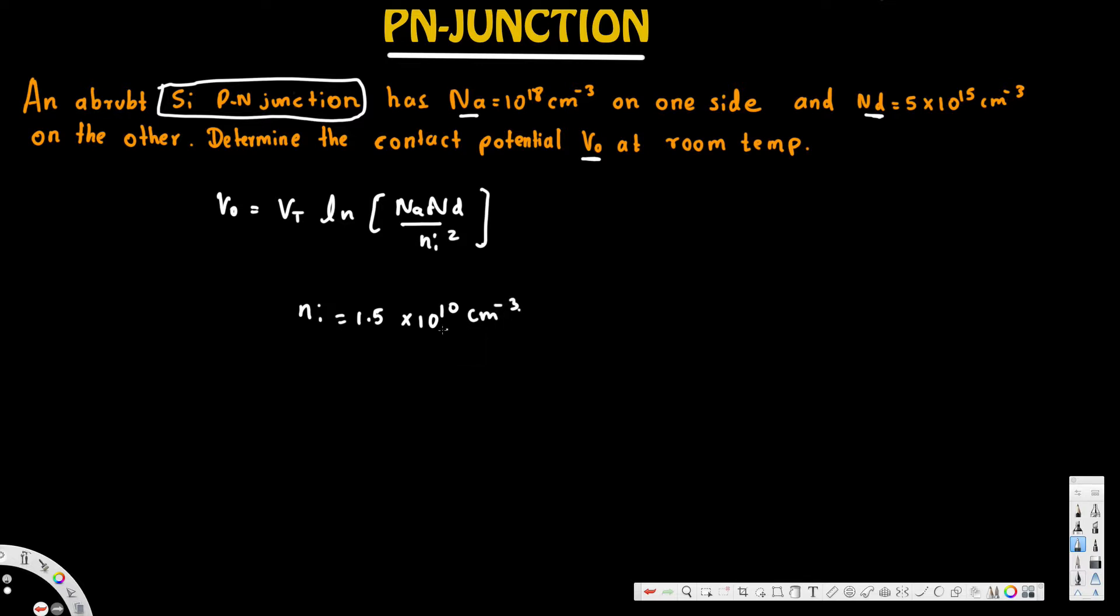And also at room temperature—room temperature is 300 Kelvin. Let's say at room temperature, which is 300 Kelvin, this VT value is equal to 26 millivolts.